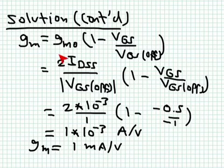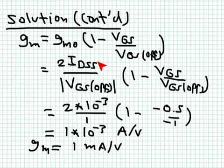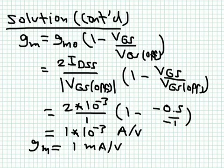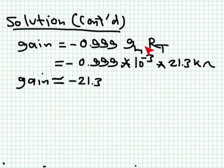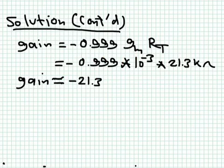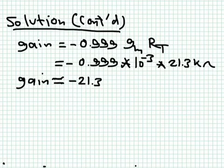Now we use GM. From the DC bias point, using the expression GM = GM0·(1 - VGS/VGS-off), where GM0 equals 2·IDSS/|VGS-off|, with IDSS = 1 mA, VGS-off = -1 V, and VGS-Q = -0.5 V, we get GM equal to 1 milliampere per volt. Substituting back: the gain is 0.99 times 1 mA/V times 21.3 kΩ, giving a gain of minus 21.3. So applying 1 millivolt at the input yields an amplified output of 21.3 times with a 180-degree phase inversion.